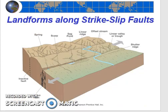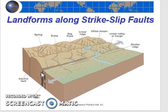Just as there are specific landforms associated with normal faults, so too there are specific landforms associated with strike-slip faults. In particular, we're going to look at three specific landforms: linear valleys, sag ponds, and offset streams. A linear valley is formed along a strike-slip fault, because as the fault moves, rocks are crushed and eroded away.